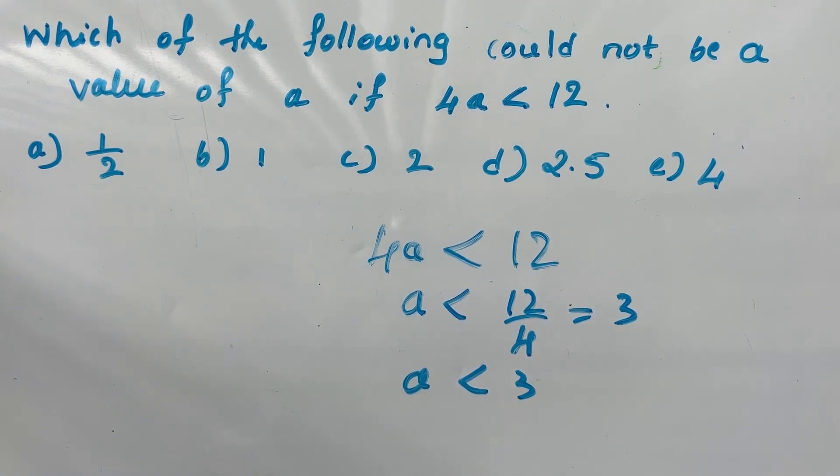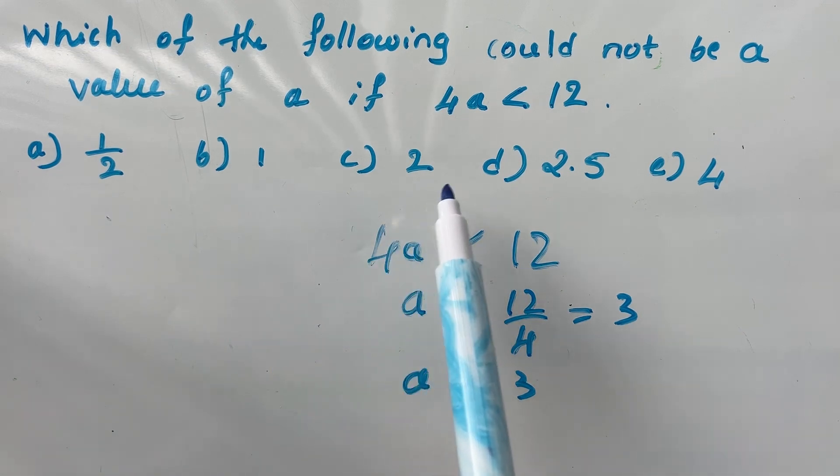4a is less than 12 means a should be less than 3. Which of the following could not be a value of a? You have values: half, 1, 2, 2.5, and 4. A should be less than 3.